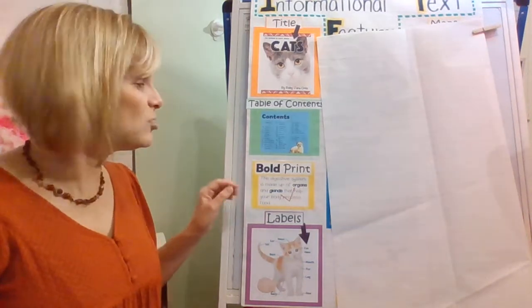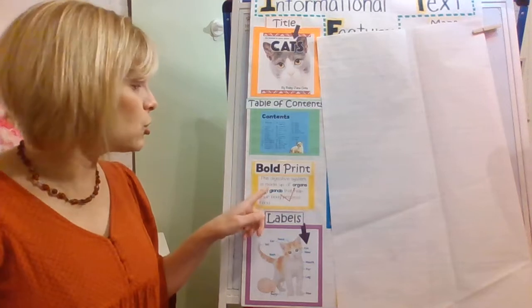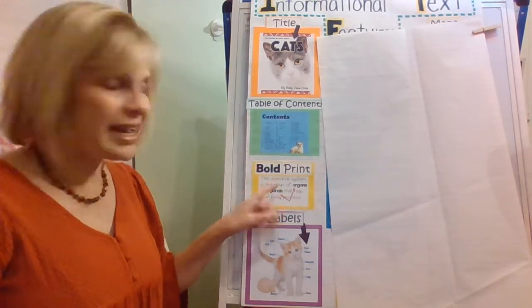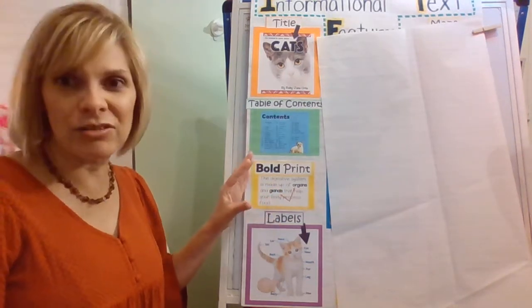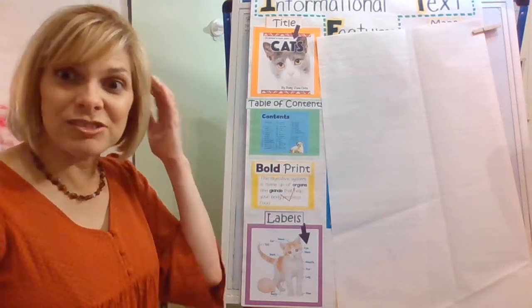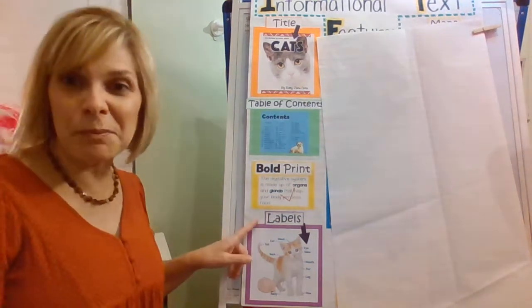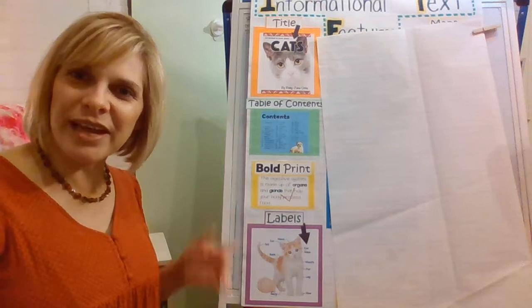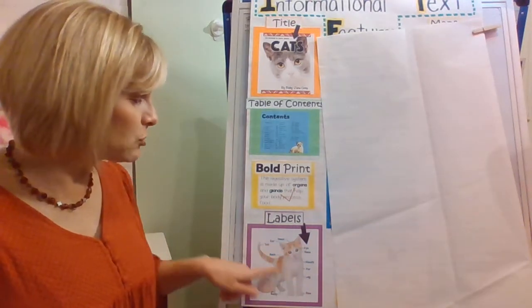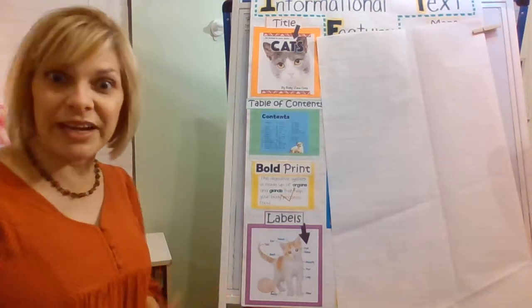Bold print — that's when the author wants you to remember certain words. So he or she will make those words darker and stand out. They may highlight the words and make them stick to your brain so you won't forget them. And labels — we do that in our writing. Authors use labels to label the parts of things, like the parts of an animal.